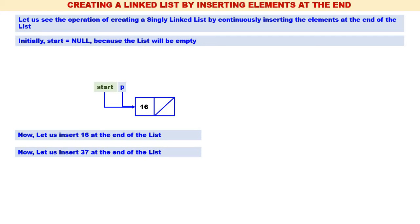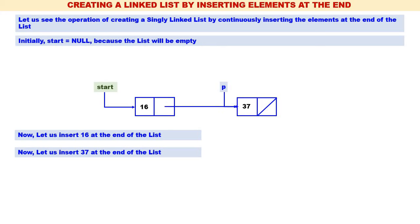Let us insert 37 at the end of the list, so 37 should be inserted after 16. Create a new node pointed by p. p->info is equal to 37, p->next is equal to null. Now, to connect the node containing 16 with the node containing 37, the address part of 16 should contain the address of 37. 16 is now connected to 37.